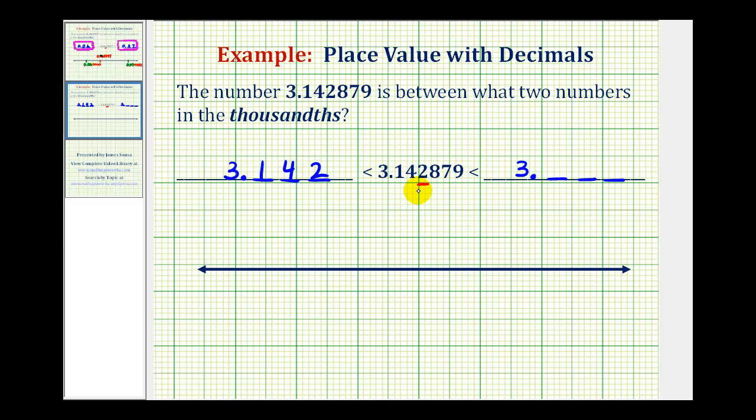And then think of rounding this up to the thousandths place value, which means we would change this two to a three, and again eliminate the remaining digits to the right. So we'd have 3.143.